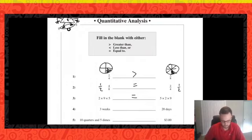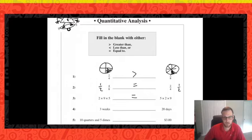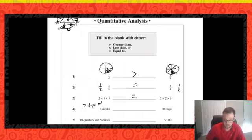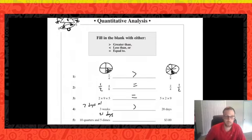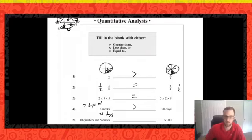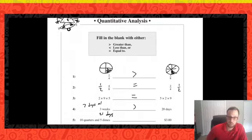Number four: is three weeks greater than, less than, or equal to 20 days? How many days are in one week? There are seven days in one week. So three weeks would be 21 days — that's greater than 20 days. It's easier to compare two numbers when they have the same name, so converting weeks to days makes for an accurate comparison.